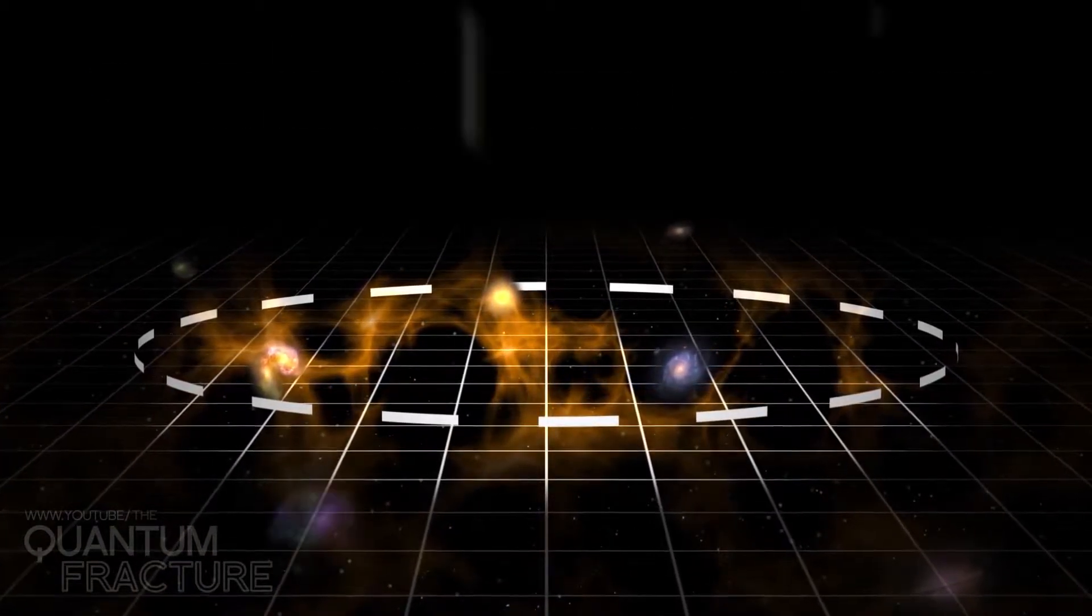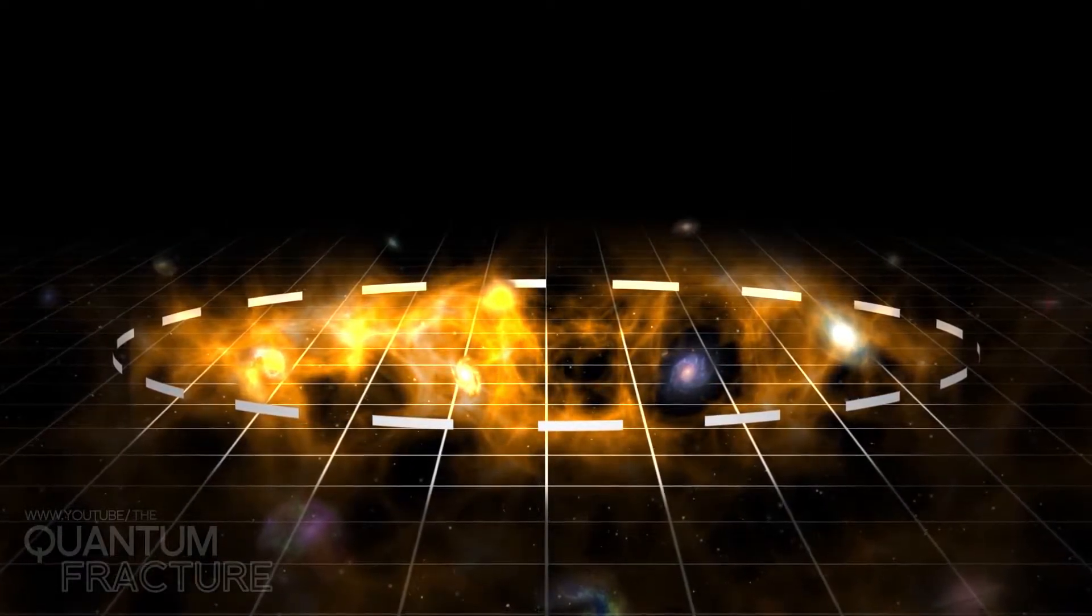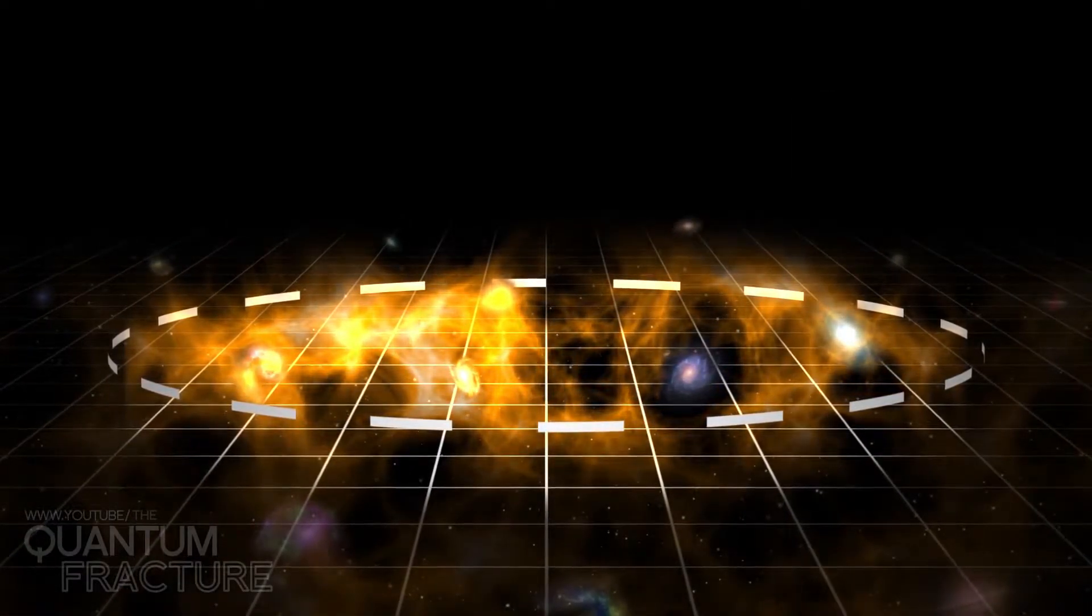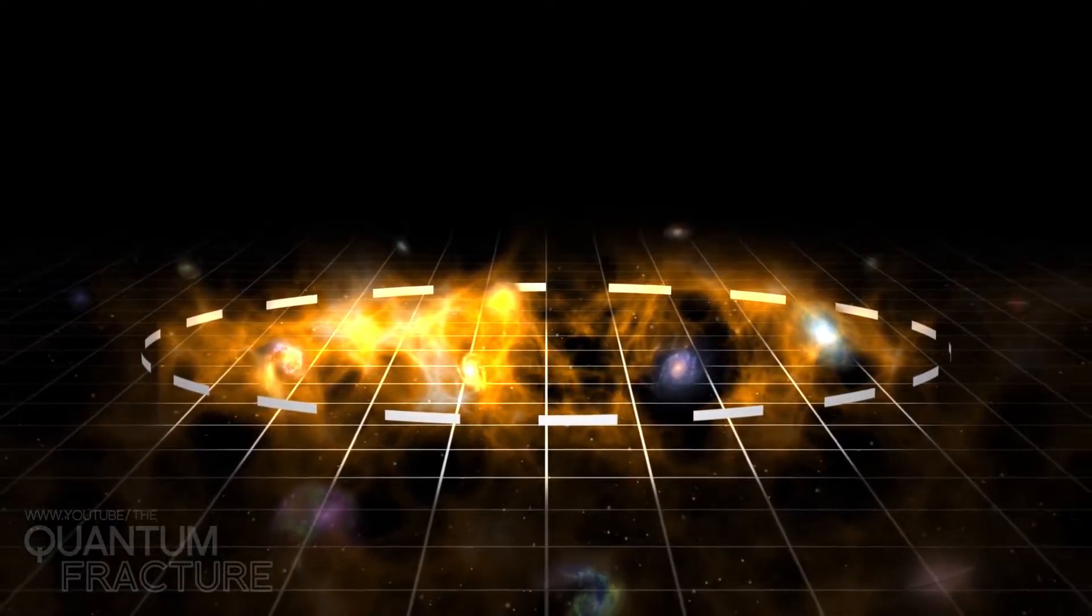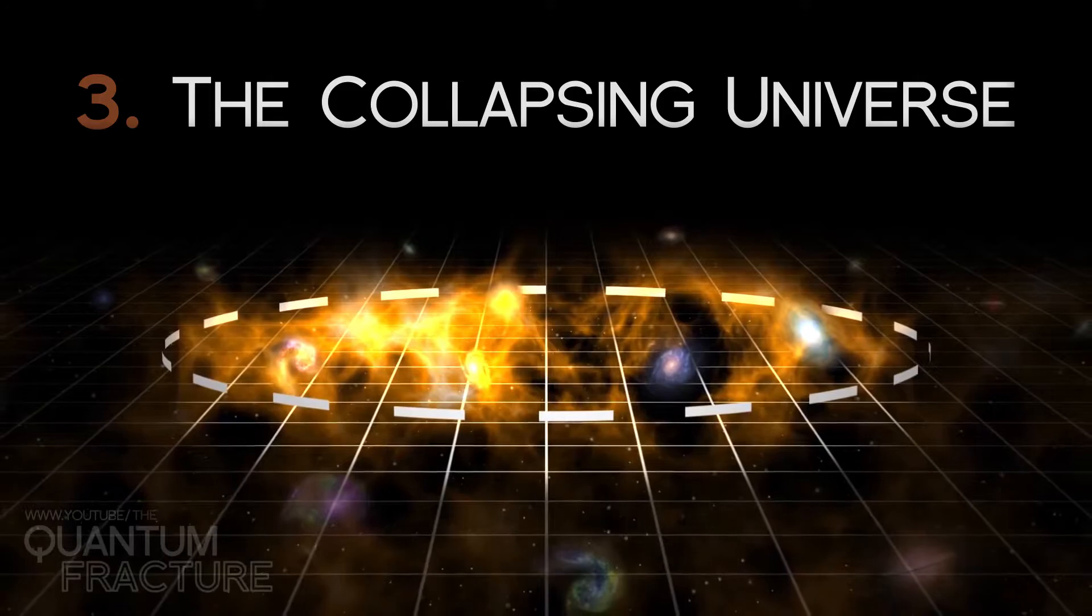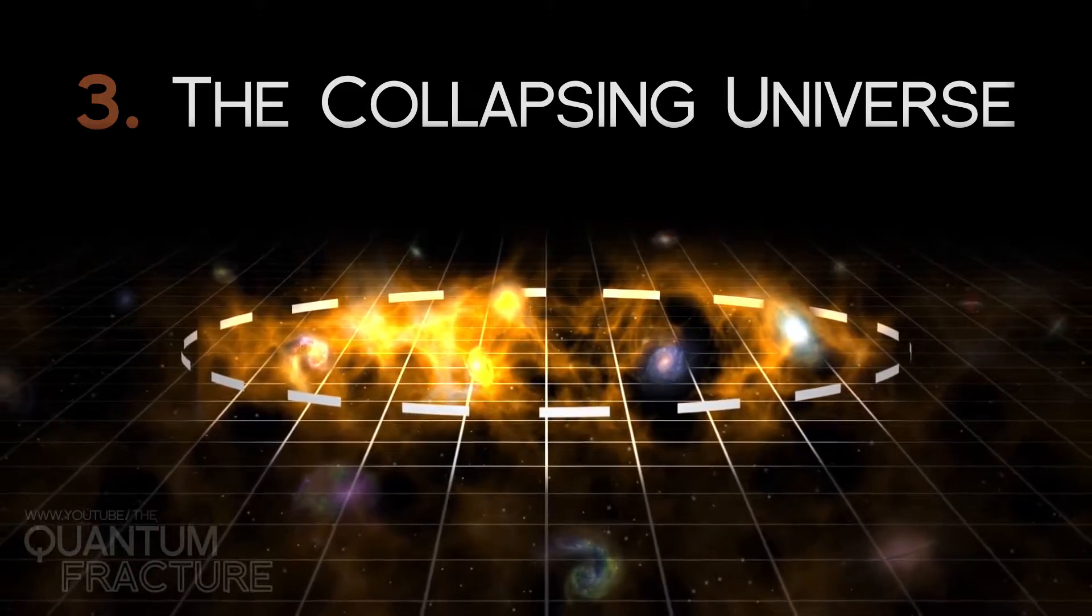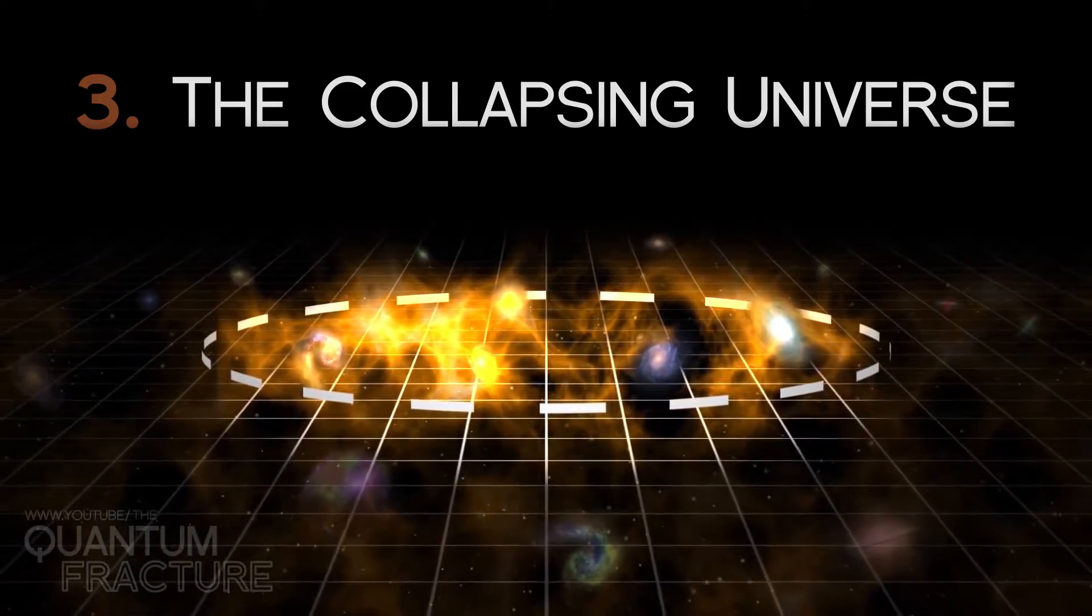But this doesn't happen if I add a lot of matter. In this case, expansion gets slower and slower until it eventually comes to a halt and contraction begins. That brings us to number three, the collapsing universe. A universe with a predictable ending. A big crunch.